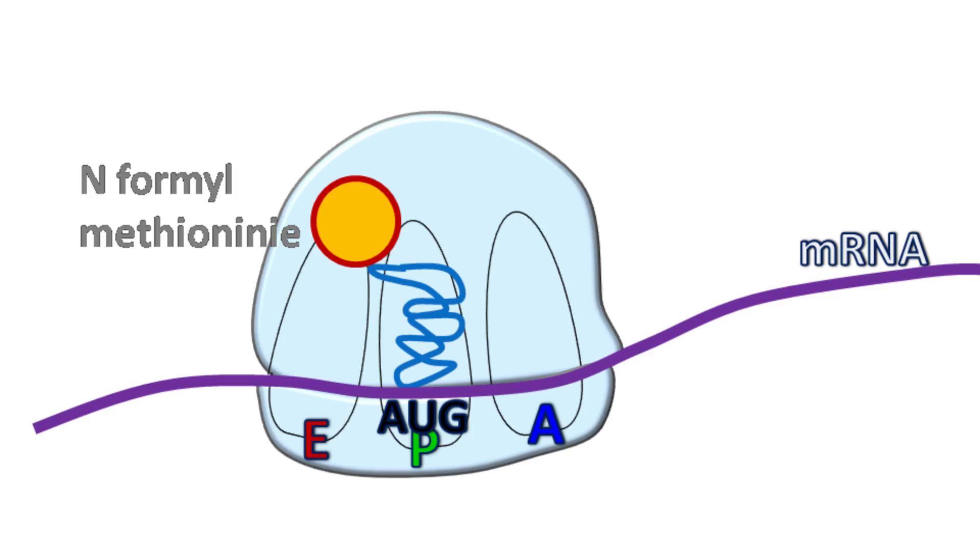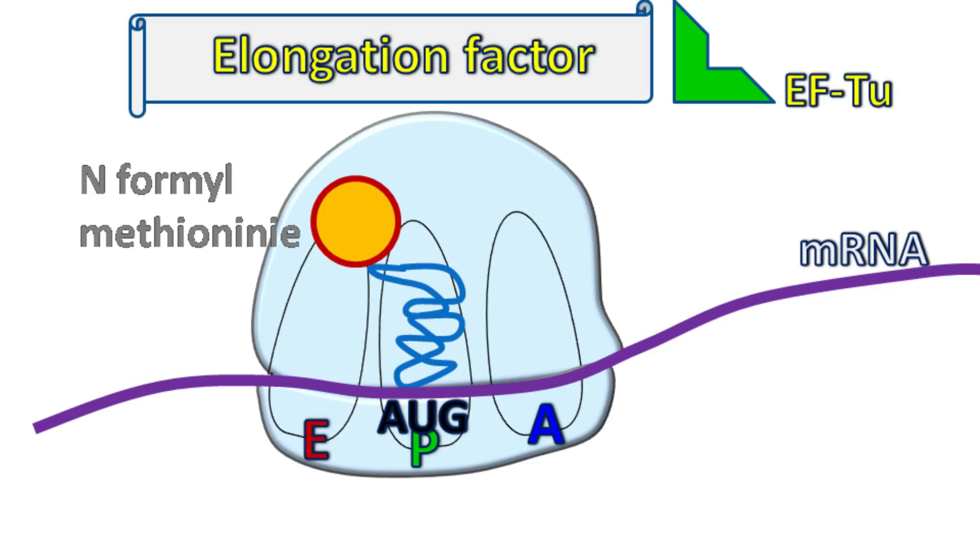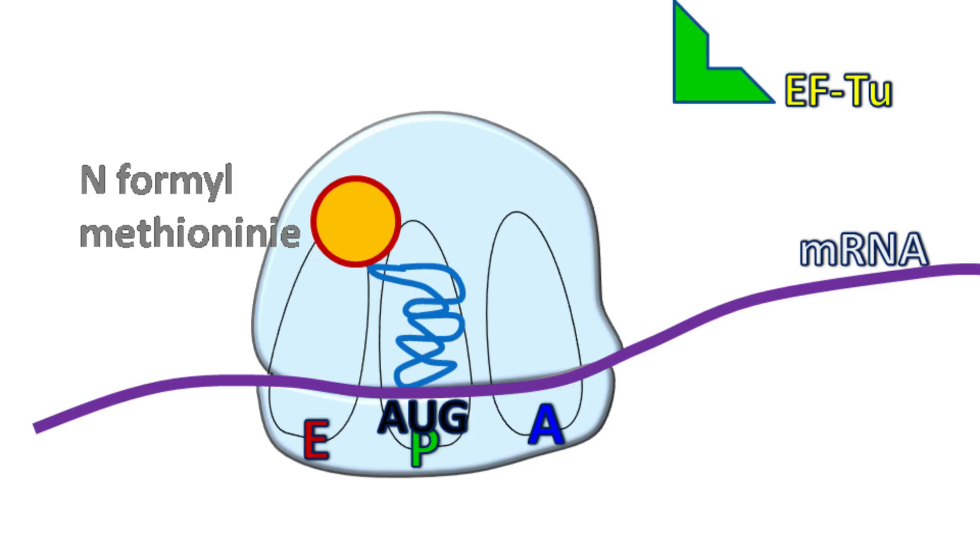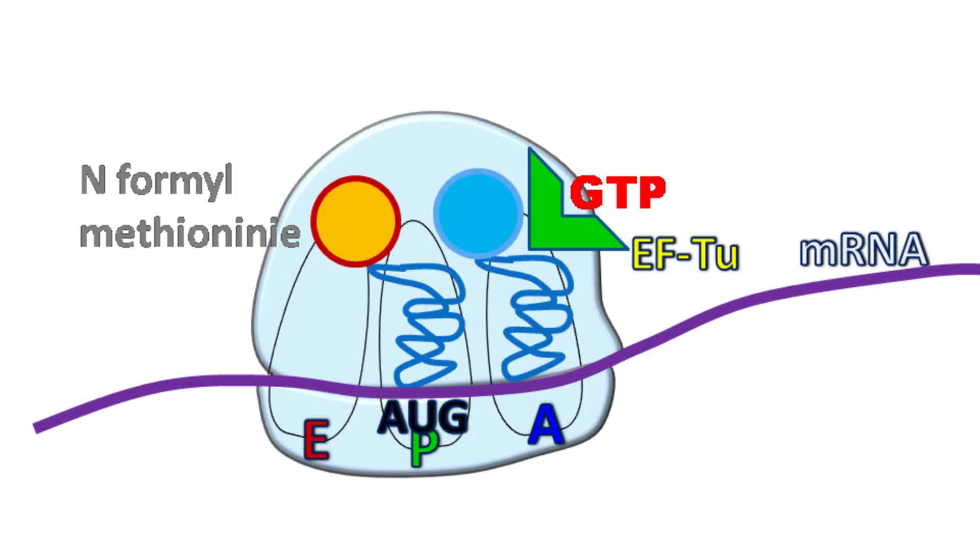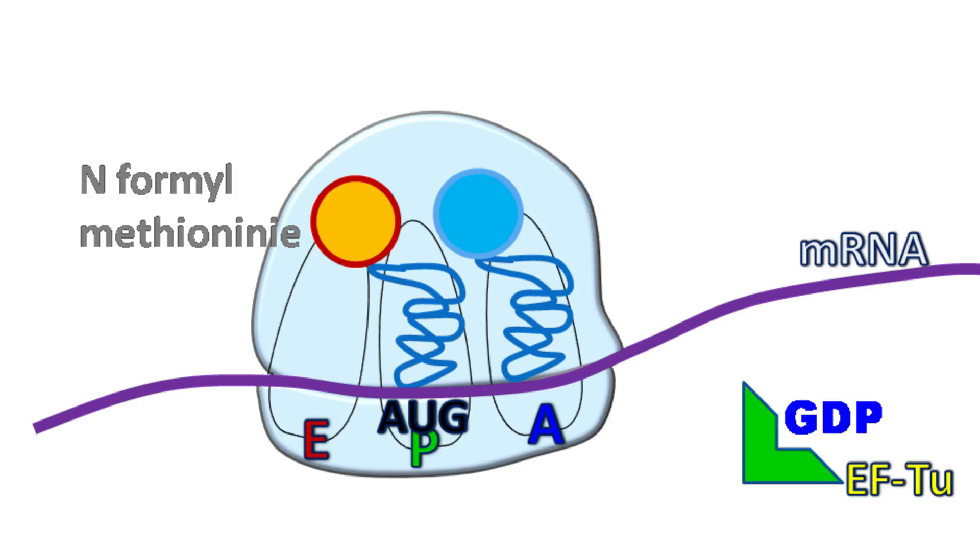GTP bound elongation factor EFTU brings the charged amino acid at the A side of the ribosome. Once the charged amino acid binds, the GTP is hydrolyzed to GDP. Finally, EFTU is released from the ribosome.